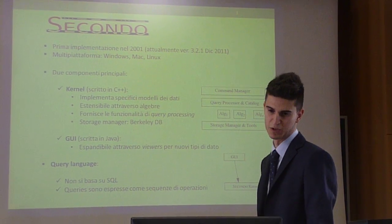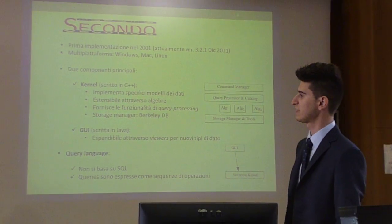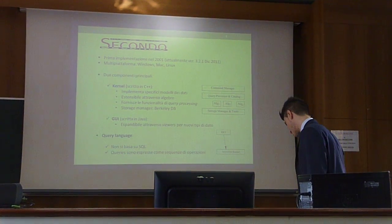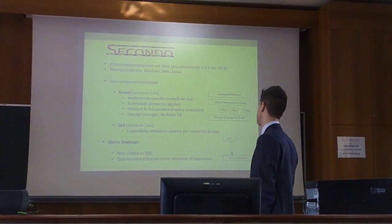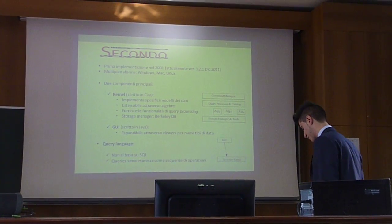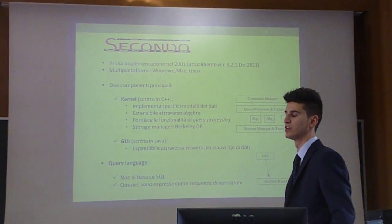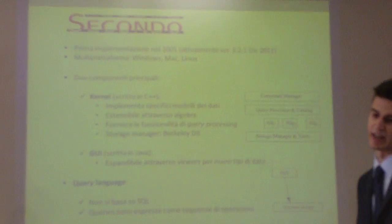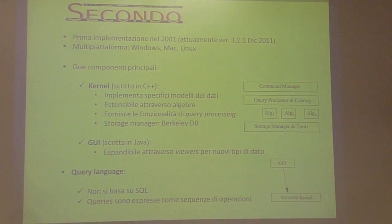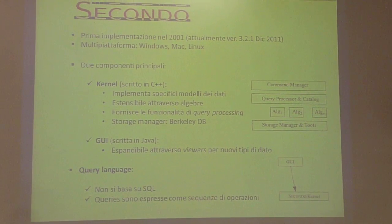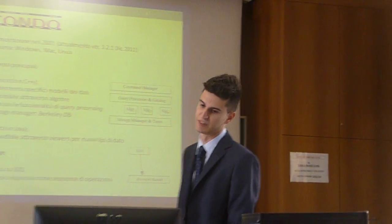La versione 3.2.1 è stata rilasciata nel dicembre del 2011 ed è multi-platform: Windows, Mac e Linux. I due componenti sono il kernel, che è il 2gbq, un modello specifico di dati sensibile all'algebra e che fornisce la personalità del query processing. Lo storage manager è Berkeley. C'è poi una graphical user interface creata in Java, utilizzata per visualizzare i nuovi dati.